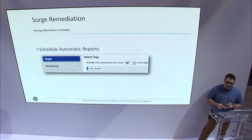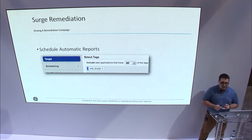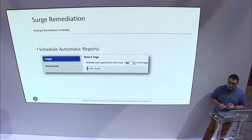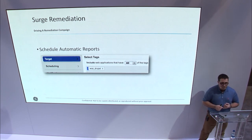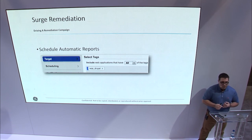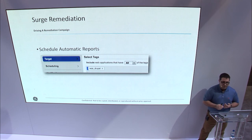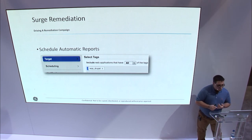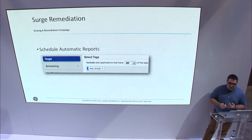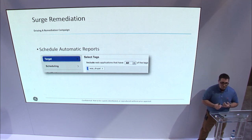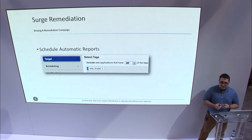Now that we have targeted applications and scheduled our scans, we create reporting to run against the same WAAS-Drupal tag. We can even include a tag to specifically send reports for applications belonging to a particular business, segmenting them out with a different schedule for each business if needed. It's a flexible process that needs to be configured for how you and your teams responsible for remediation need to take the appropriate action.